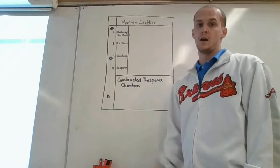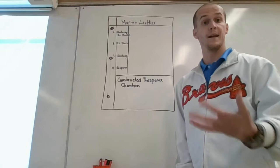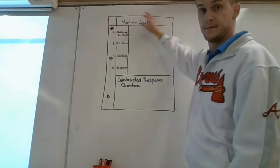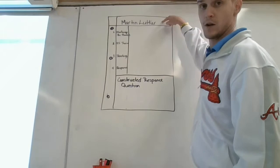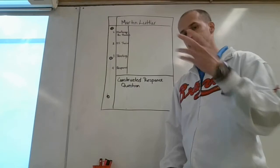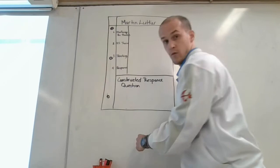What I want you to do is take notes in Cornell-style notes. Here I drew a rough outline of what a sheet of paper looks like. At the top of that paper, you're going to write Martin Luther because that's who these notes are on. Then you're going to draw a line all the way down. Your notes are probably going to take two pages.